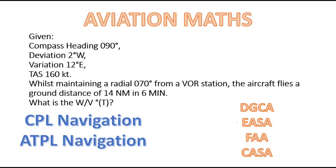The question that we will solve now states: given compass heading 090 degrees, deviation 2 degrees west, variation 12 degrees east, TAS 160 knots, while maintaining a radial of 070 degrees from a VOR station, the aircraft flies a ground distance of 14 nautical miles in 6 minutes. And with this given data, we need to calculate the wind direction and velocity.